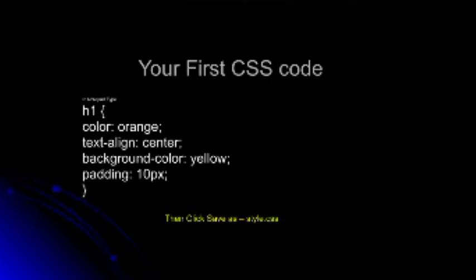If you want to expand this code, you can add more properties. We had color and text-align. Now we're adding 'background-color: yellow' and 'padding: 10px'. Padding is the spacing between the content and the surrounding border — that's the side and top/bottom spacing. So the curly bracket opens and closes as usual. Save it the same way as style.css.